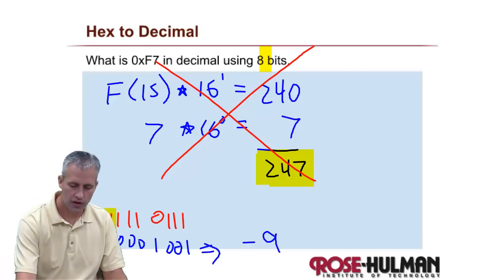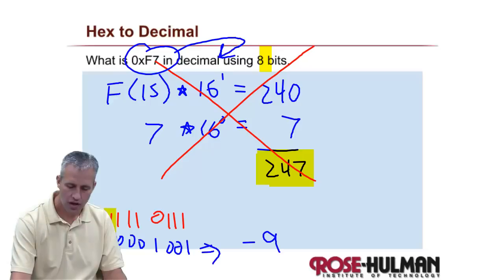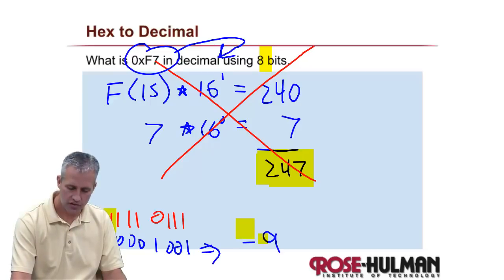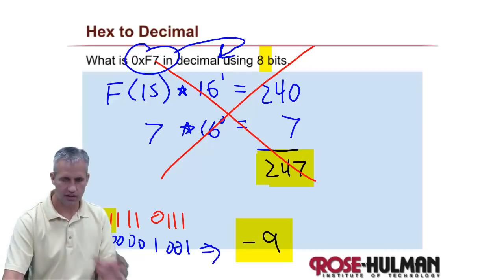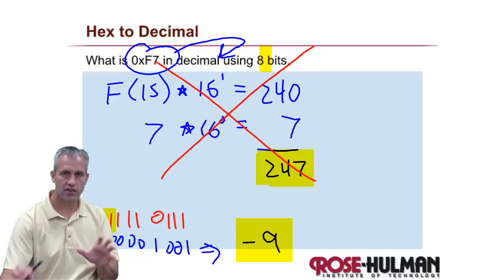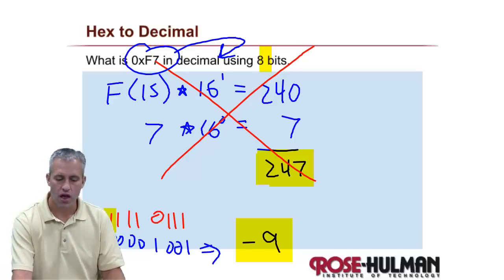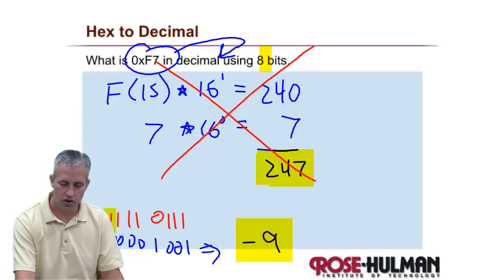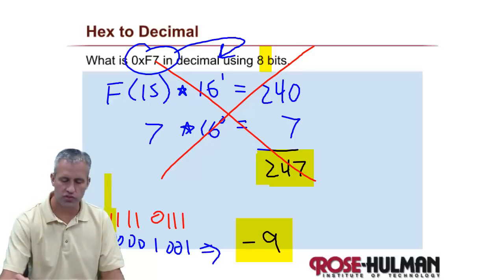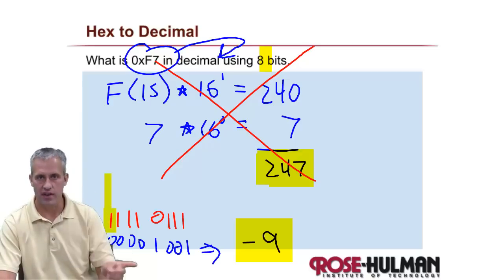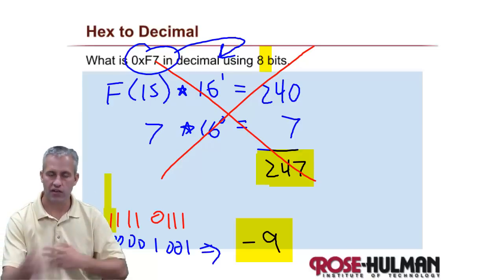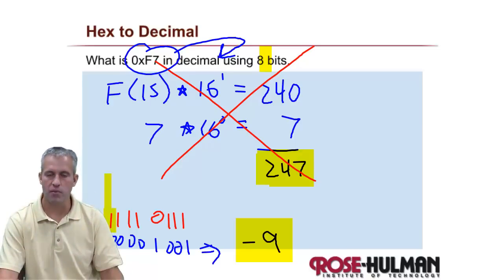So if we wanted to convert this number to decimal, the answer is negative 9. I know that's kind of surprising for some people, but the trick is you have to know what the most significant bit is. If it's a 1, it's negative, and you have to do the two's complement thing.